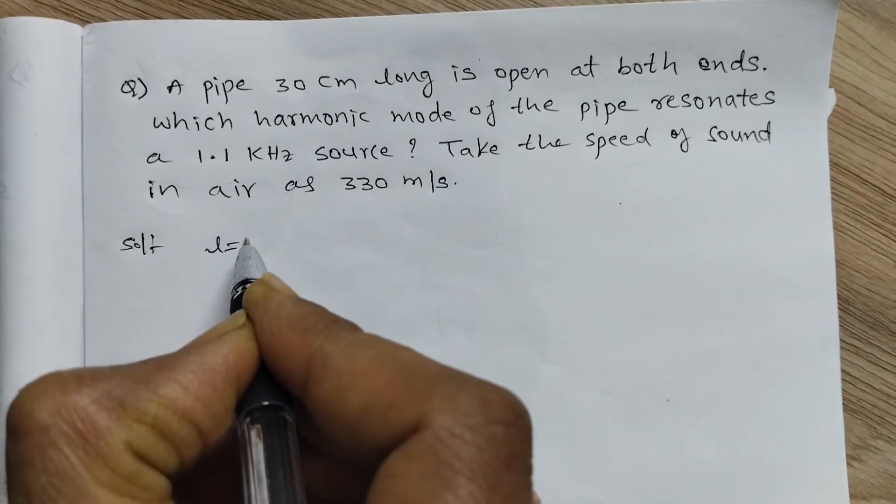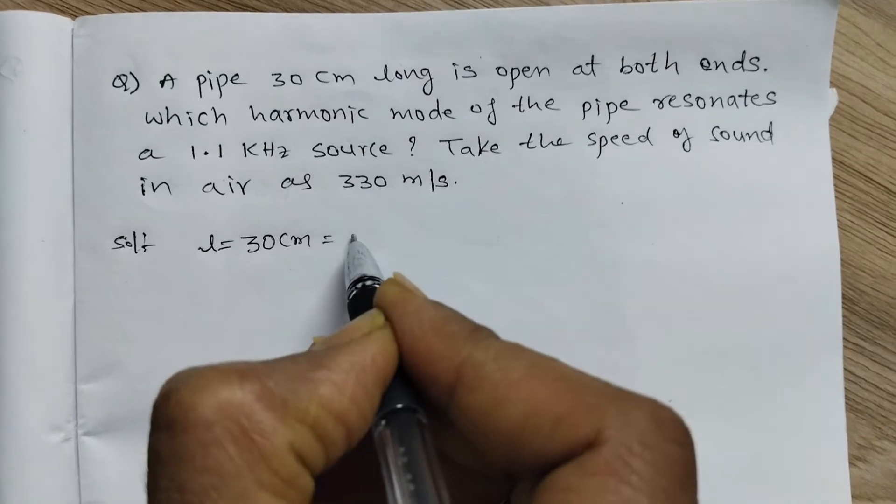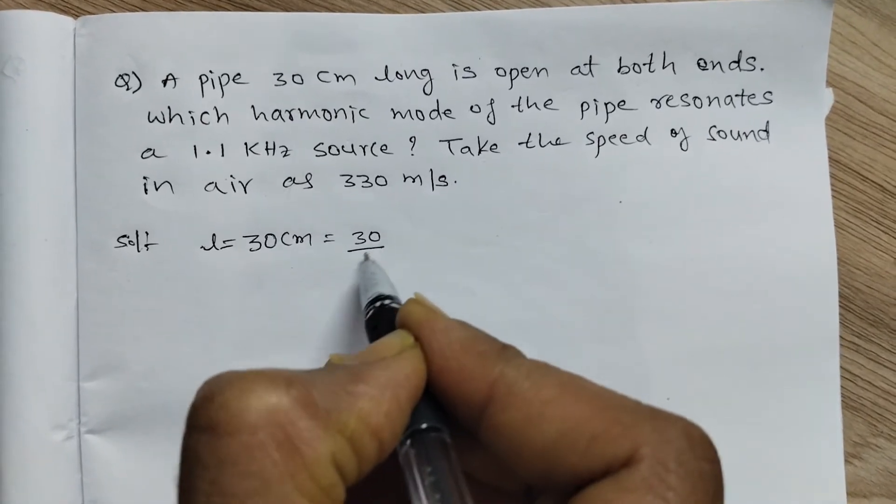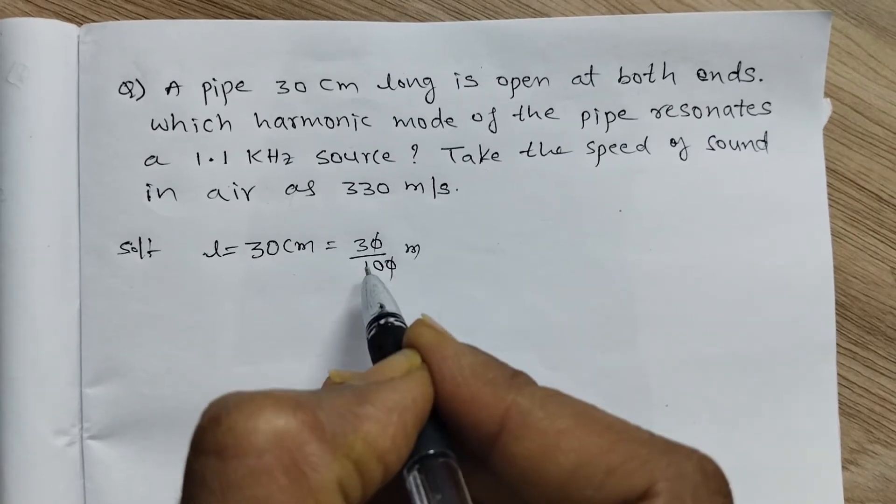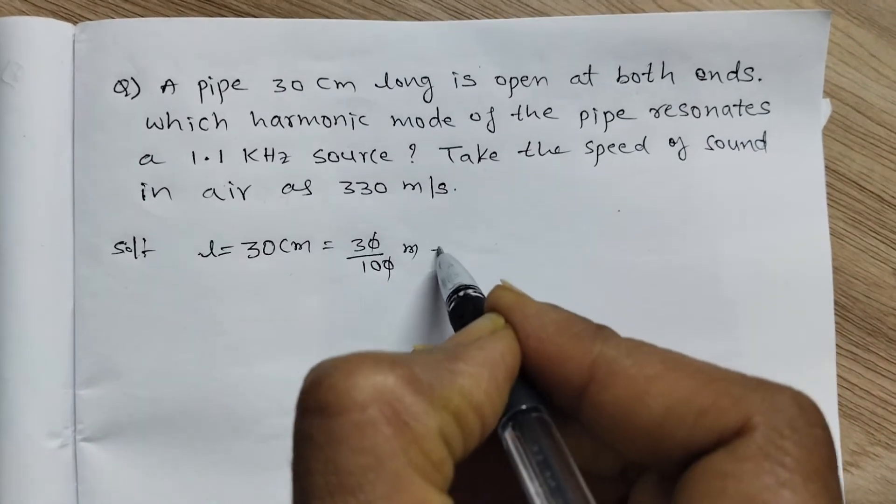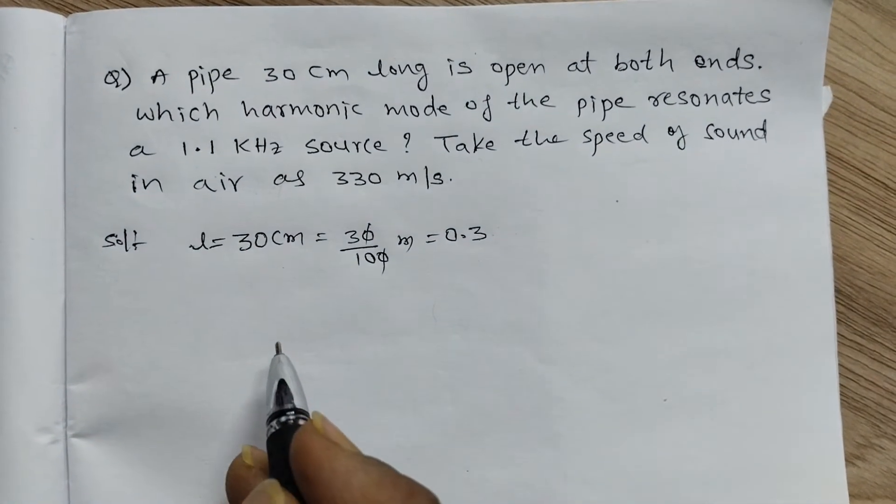First, length: L is equal to 30 centimeter, which is 30 by 100 meter, equals 0.3 meter.